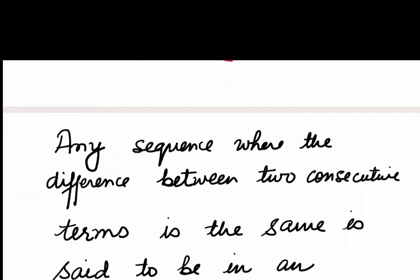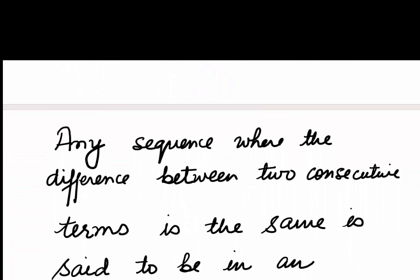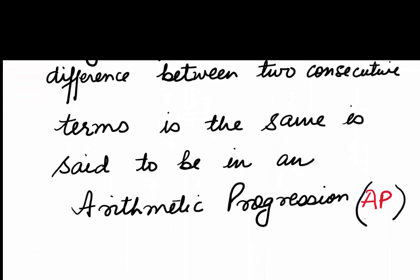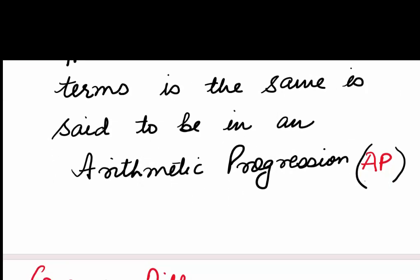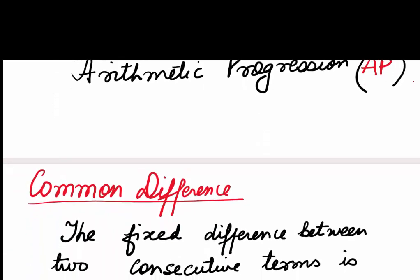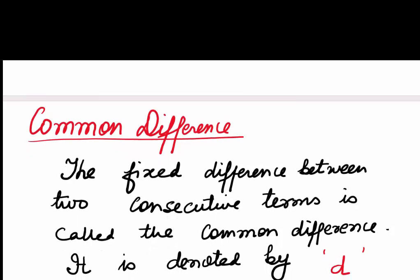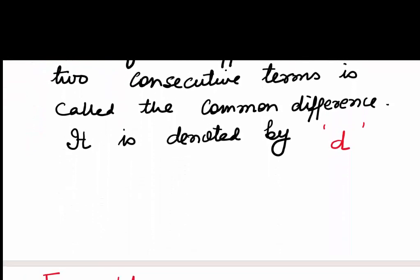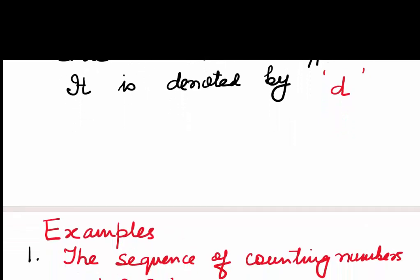In other words, any sequence where the difference between two consecutive terms is the same is said to be in an arithmetic progression. We write, in short, AP for arithmetic progression. This fixed difference between two consecutive terms is called the common difference, and it is denoted by the small letter D.